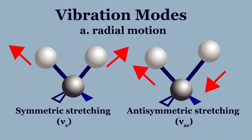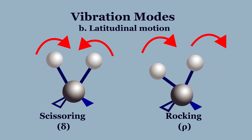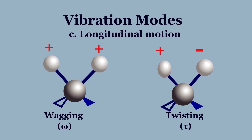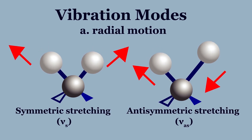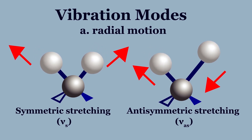The two stretching modes, symmetric and asymmetric, are radial in direction. For the four bending modes, there are two in-plane directions: scissoring, which is symmetric, and rocking, which is antisymmetric. The other two bending modes are out-of-plane: symmetric wagging and antisymmetric twisting. Symmetric vibration means bonds vibrate together in the same direction, and antisymmetric means bonds vibrate in opposite directions.